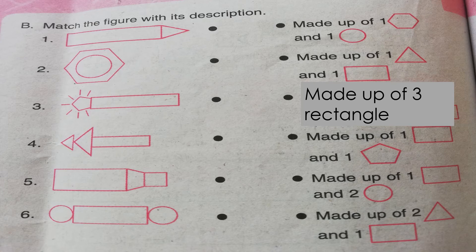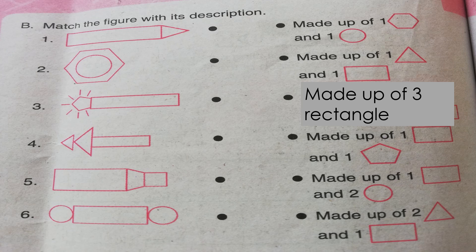Match the figure with its description. Number one. The number one figure is made up of one rectangle and one triangle. So, this is the answer. How about figure number two? Figure number two is made up of one hexagon and one circle. Figure number three. It is made up of one pentagon and one rectangle. And how about figure number four? It is made up of two triangles and one rectangle. So, this is the answer.